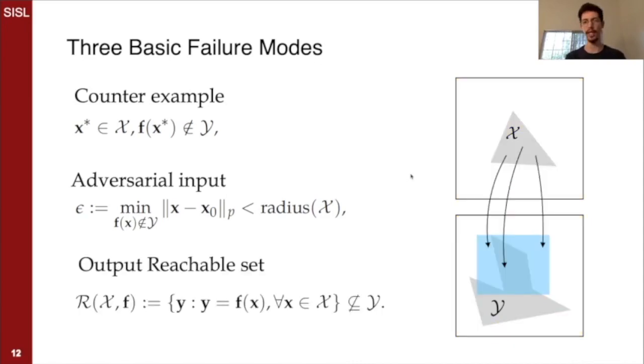Finally, and this is the one we'll focus on, is we can forward propagate the input set as a set, not as a series of points, through the network and determine whether that reachable set ultimately lies in the allowed set. In this case, it doesn't, and therefore the network has failed the property, or the property is violated is what we say.